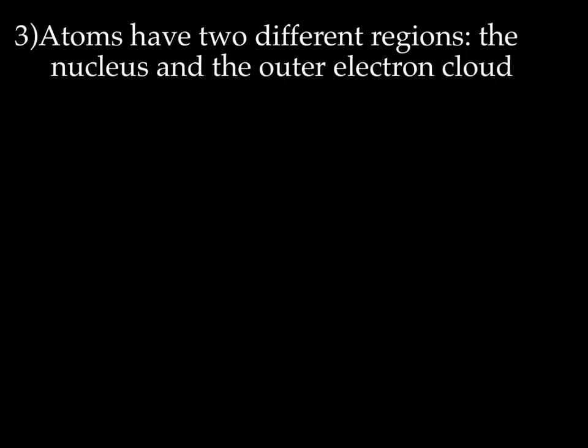Atoms have two different regions: the nucleus and the outer electron cloud. I'm now going to draw what's going to look like a really ugly picture of an atom — however, it's actually a fairly accurate representation. So let's start with the nucleus. We'll draw the nucleus in blue here.